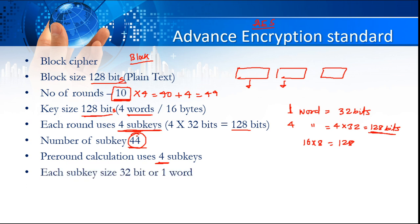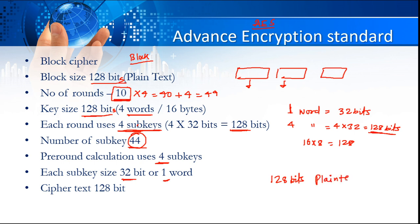Each sub-key size is going to be 32 bits, meaning one word. So when we talk about four sub-keys, the size is 128 bits. After you go through all the process of AES, we are giving a block of 128 bits as plain text, and this plain text will be encrypted to give us 128 bits of cipher text as output.